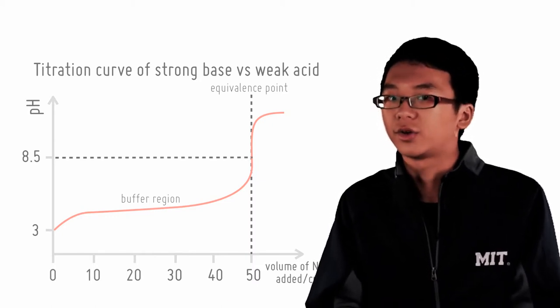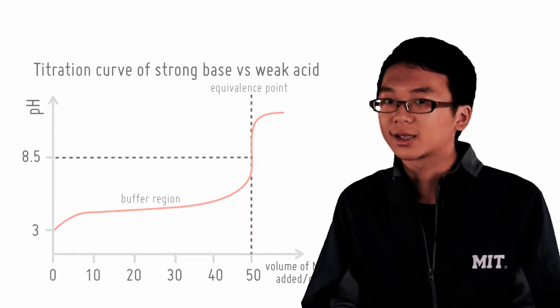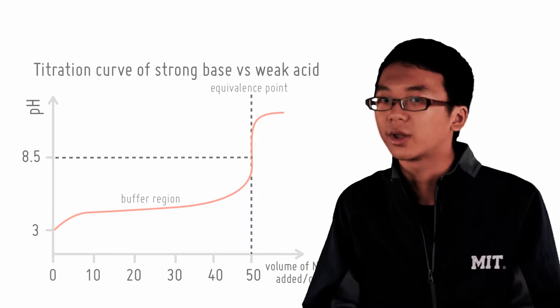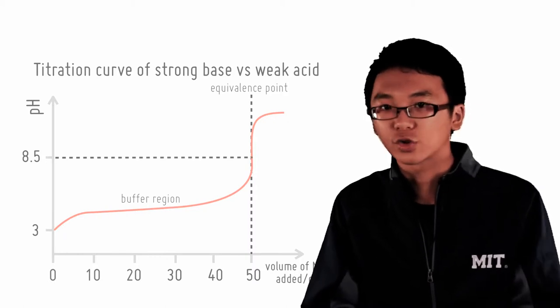Hence, further increasing the pH of the solution. This makes the pH at equivalence point not exactly 7 but something larger than 7 due to salt hydrolysis producing hydroxide ions.